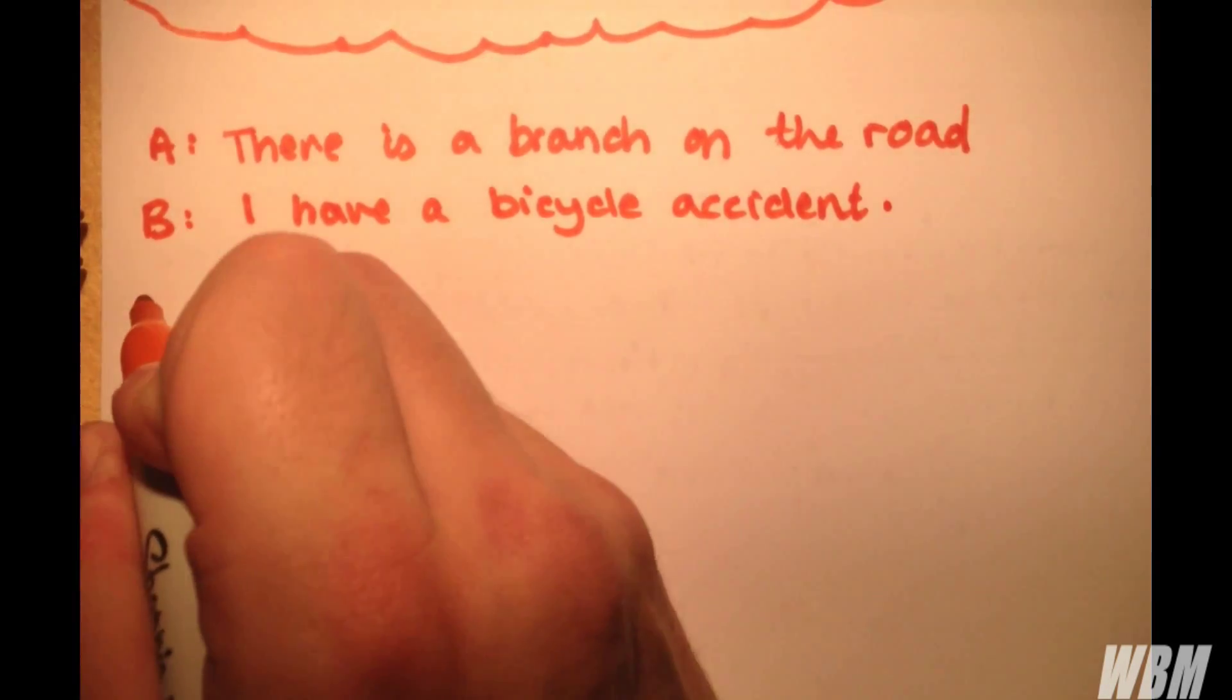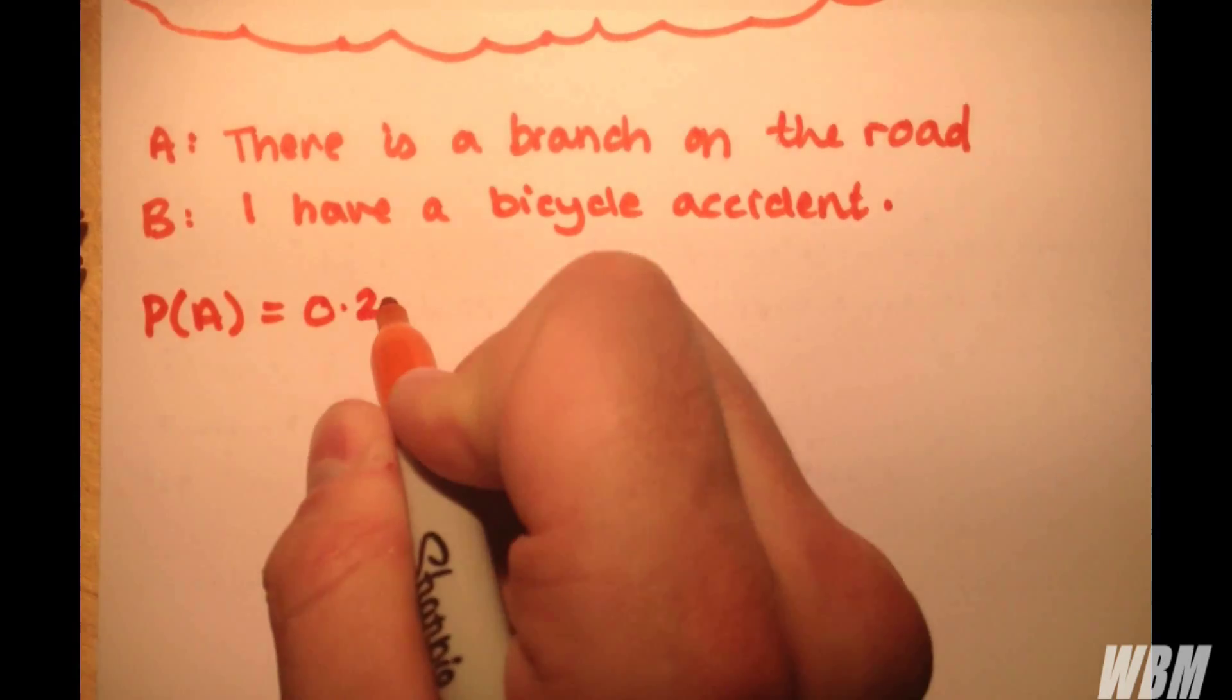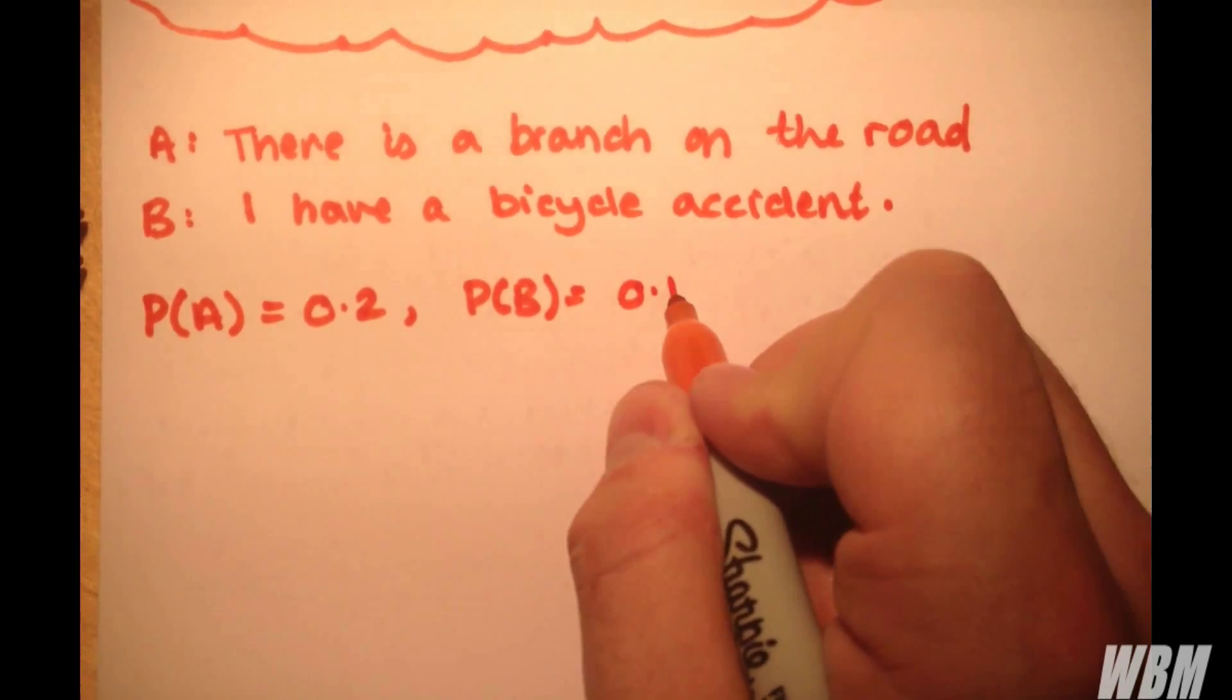We're going to let probability of A equal 0.2. The probability that I have a bicycle accident, B, equal 0.1.